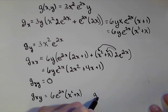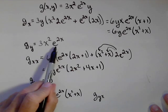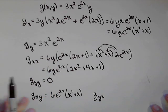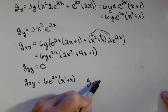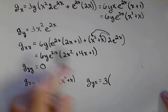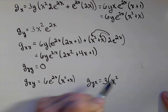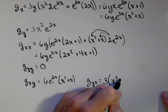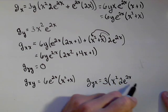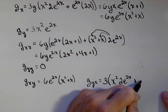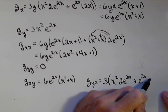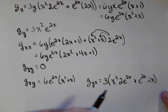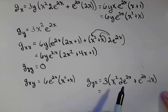All right, let's confirm this. We're going to do G sub y with respect to x. Here's our G sub y. We're going to have another product rule here. So, I've got 3 times x² times the derivative of e^(2x), which is 2e^(2x) plus, now I'm going to hold the e^(2x) constant times the derivative of x², which is 2x.